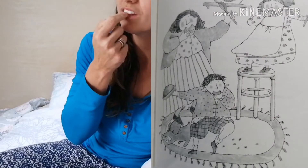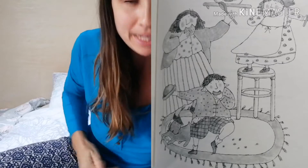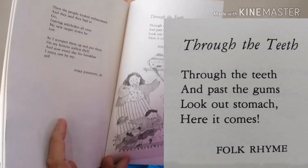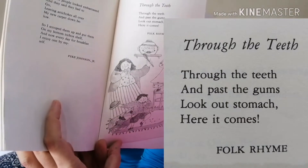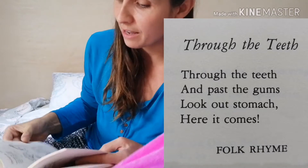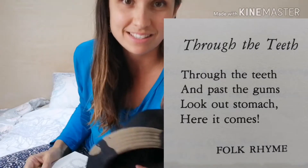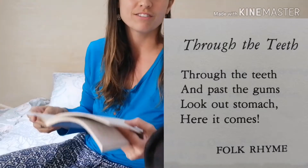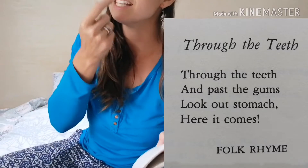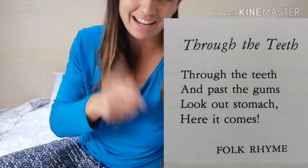Through the teeth and past the gums — look out stomach, here it comes! Here's the picture — do you see they're eating cookies? Now I want to say it a few times and I want you to try to say it with me, and practice saying it whenever you eat something for the next few days. Through the teeth, past the gums, look out stomach, here it comes.